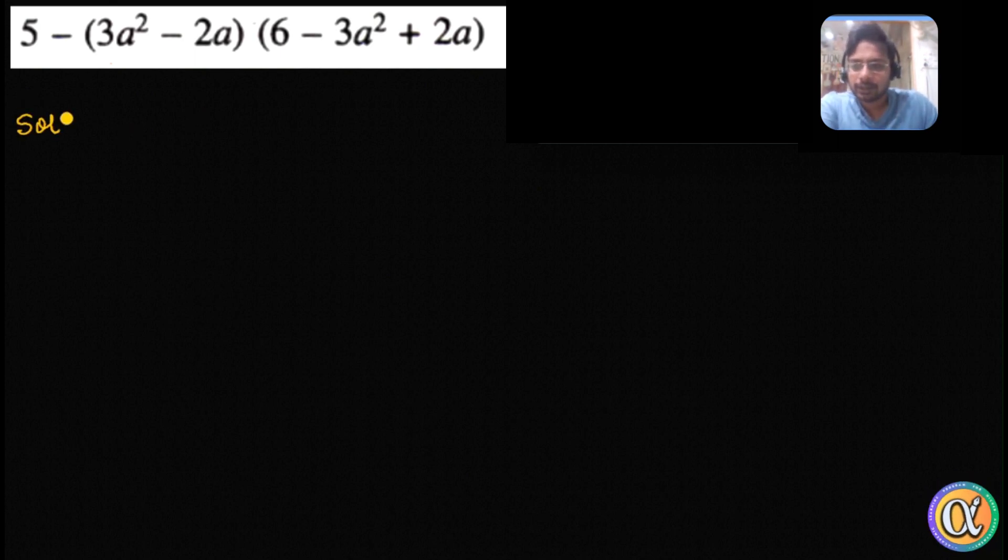Before expansion, I'm going to do one different step. Let's see how to proceed. What I'll do is leave 5 outside the first bracket, and I'll try to convert this minus 3a squared plus 2a to a form plus 3a squared minus 2a. For that, we just take minus common inside the bracket.